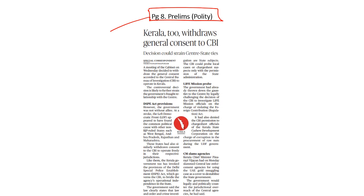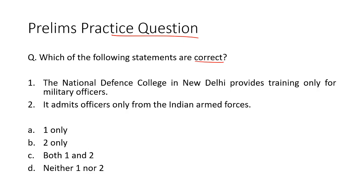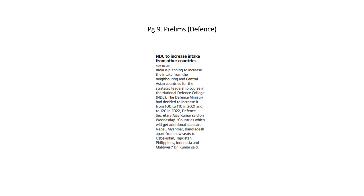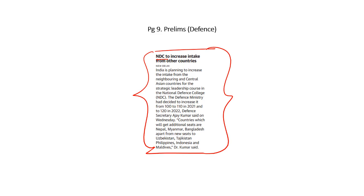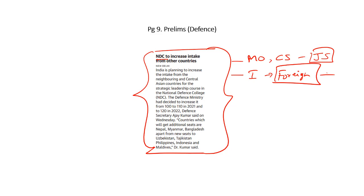This question has been asked because according to an article on page number 8, Kerala has also withdrawn general consent given to the CBI. Now let's take up the next question. Which of the following statements are correct? The National Defense College in New Delhi provides training only for military officers and admits officers only from the Indian Armed Forces. Both statements are incorrect, so option D is the right answer. The National Defense College provides training in strategic courses and on issues related to international relations and national security not just to military officers but also to civil servants, especially those above the rank of joint secretaries, and also to foreign officers from friendly countries.